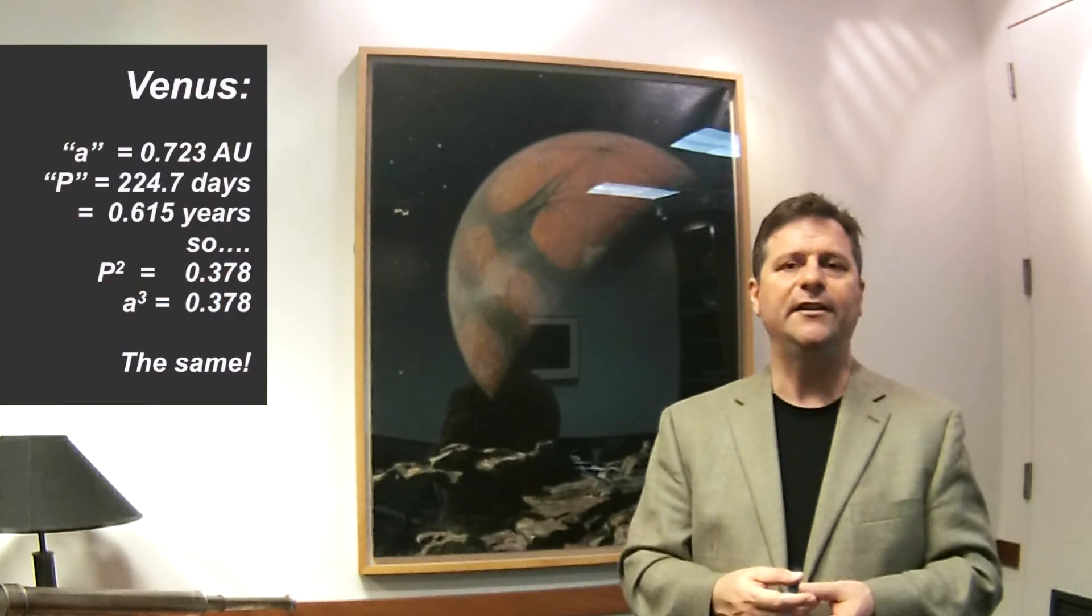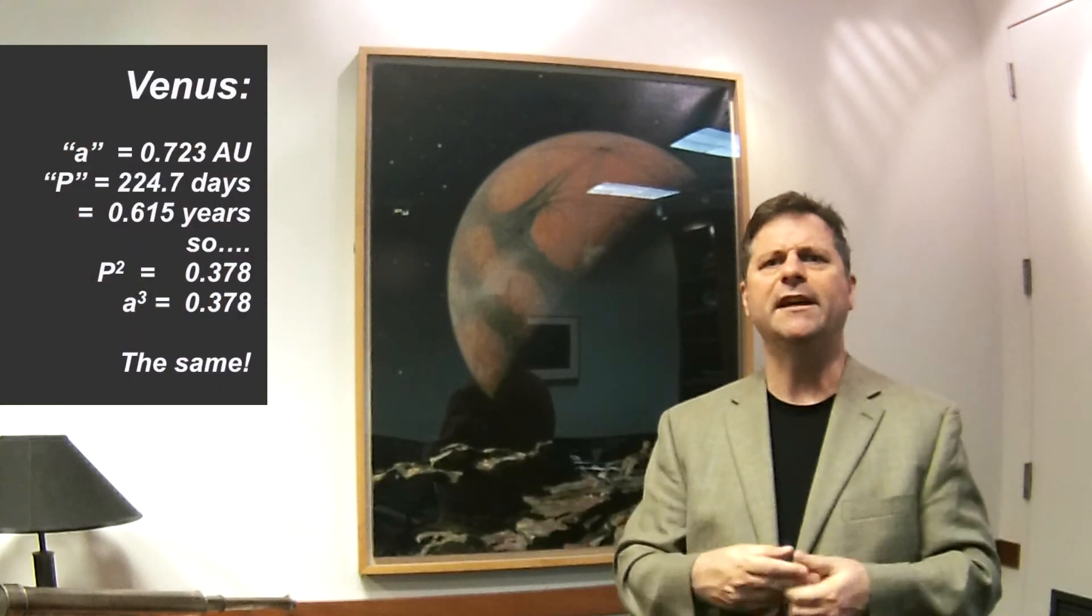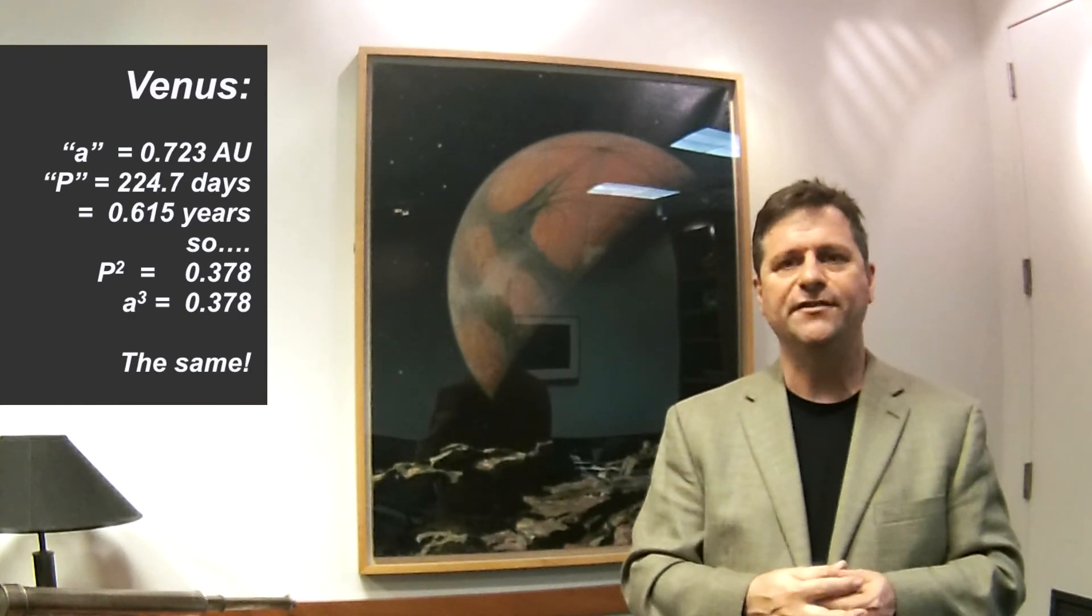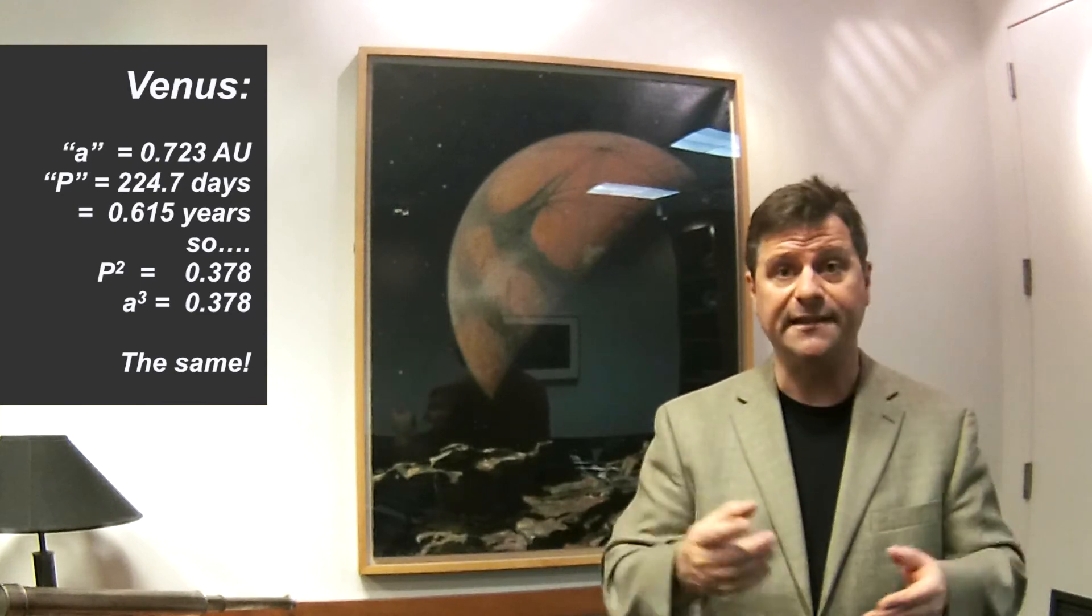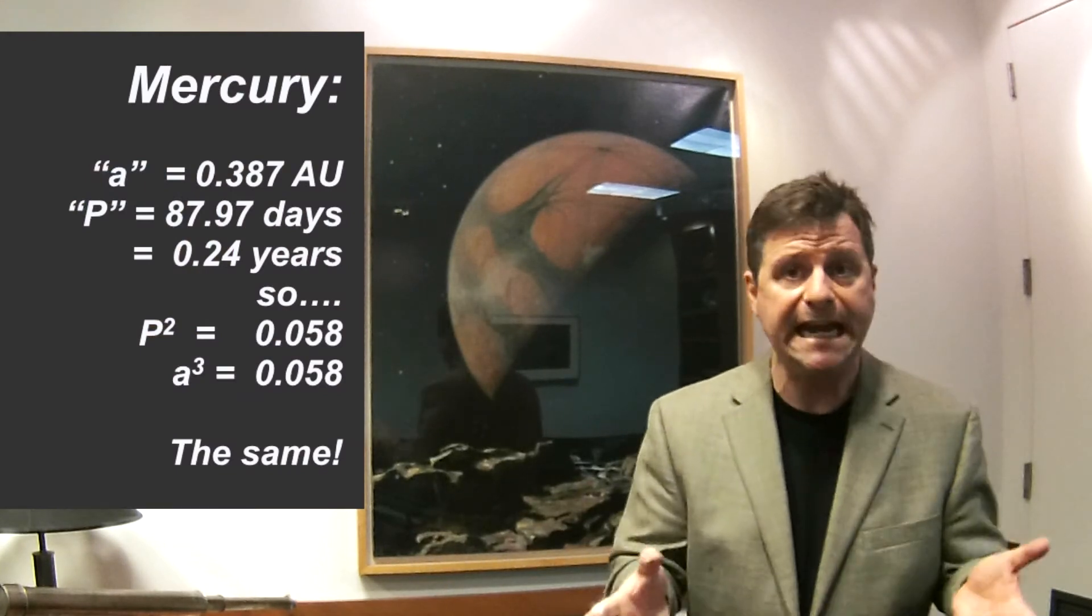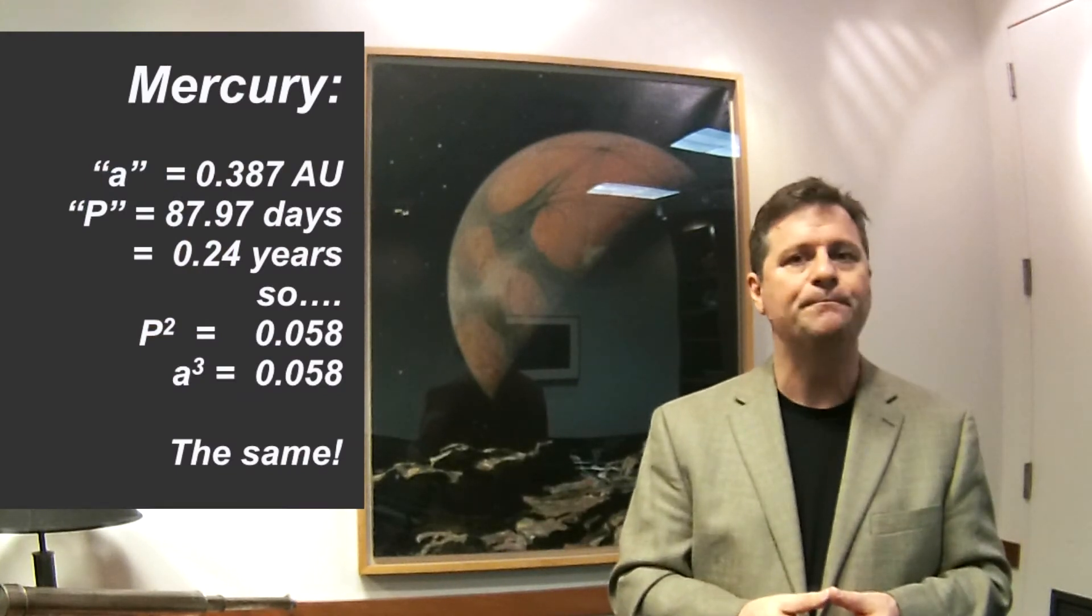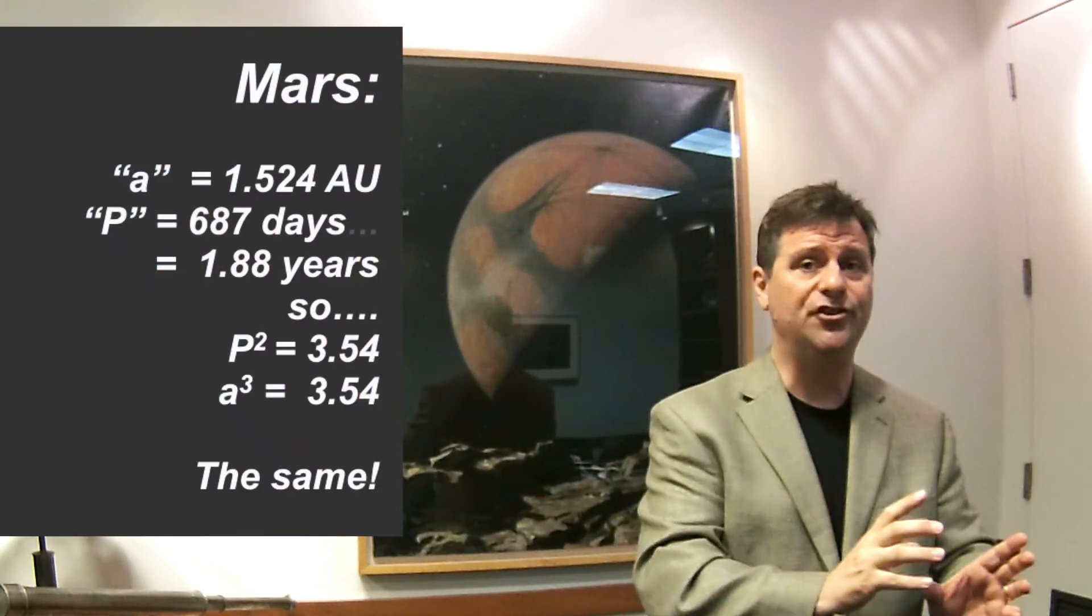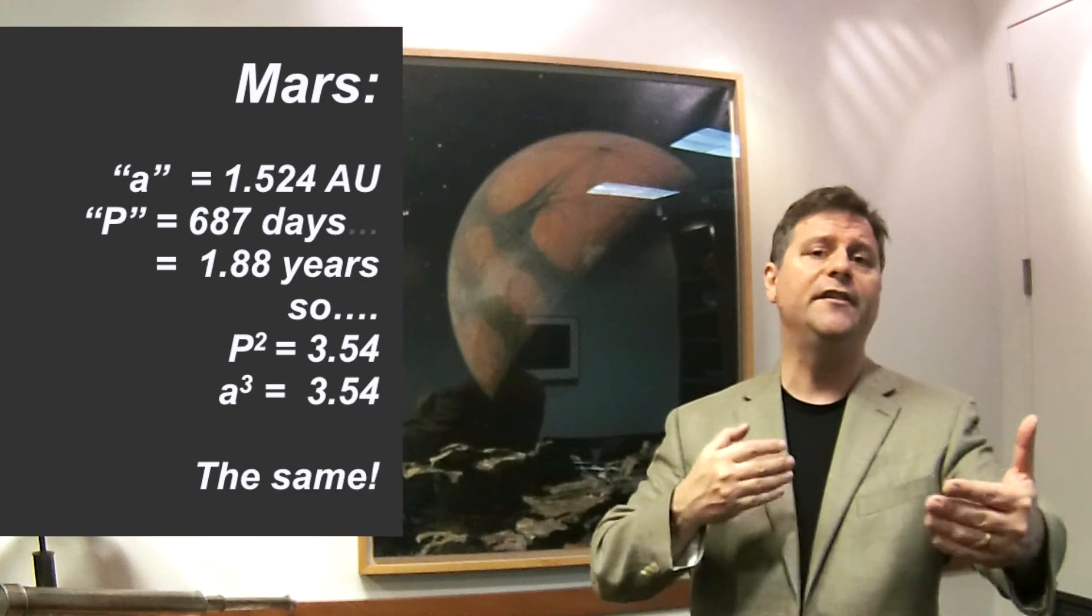And for Venus, the period, the A is about 0.72. And so I forget what that works out to be for the average distance is 0.72. So the average year is a few hundred days, a couple hundred, it's over 200 days. And for Mercury, it's about a third of an astronomical unit, and so it's about 88 days for its orbit around the sun. So what's fascinating is that this provides a relationship between all the distances.